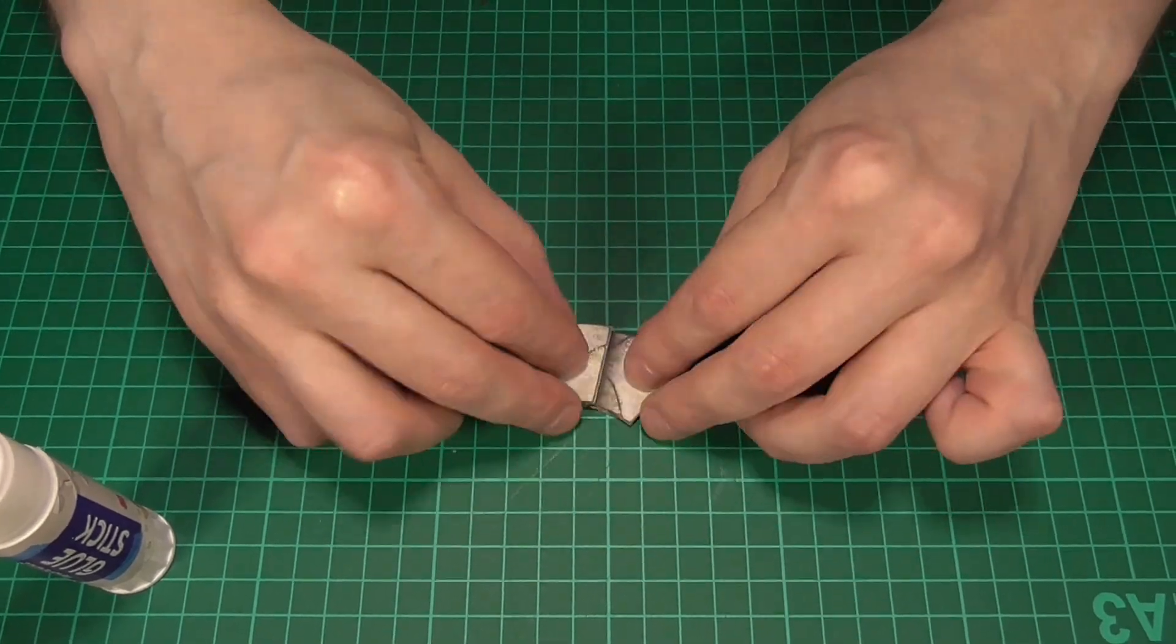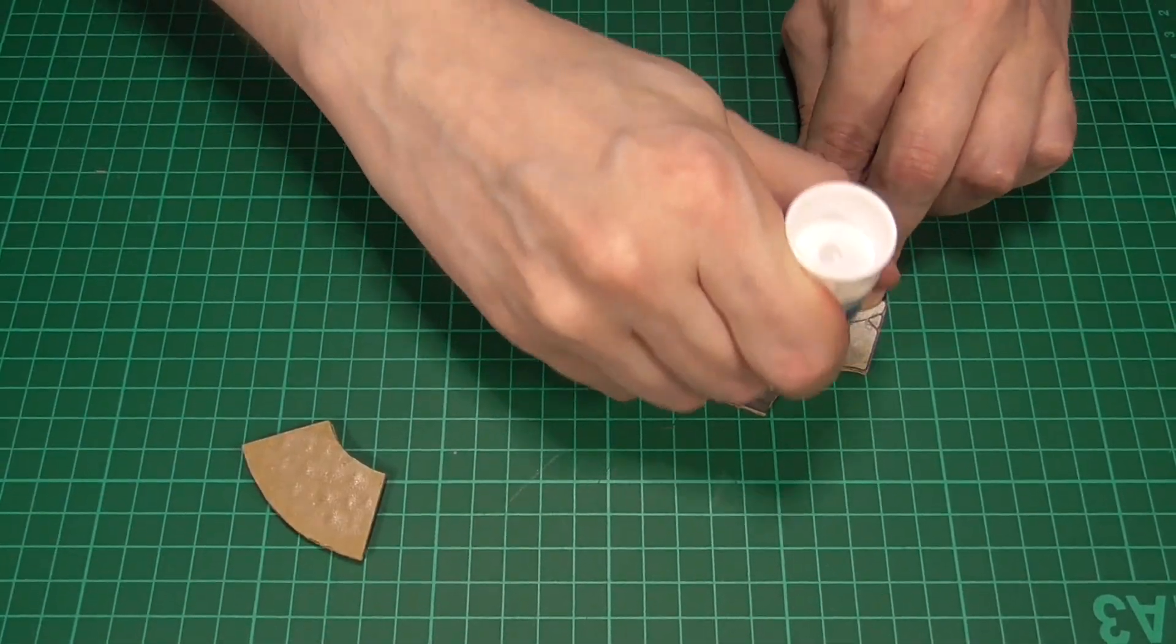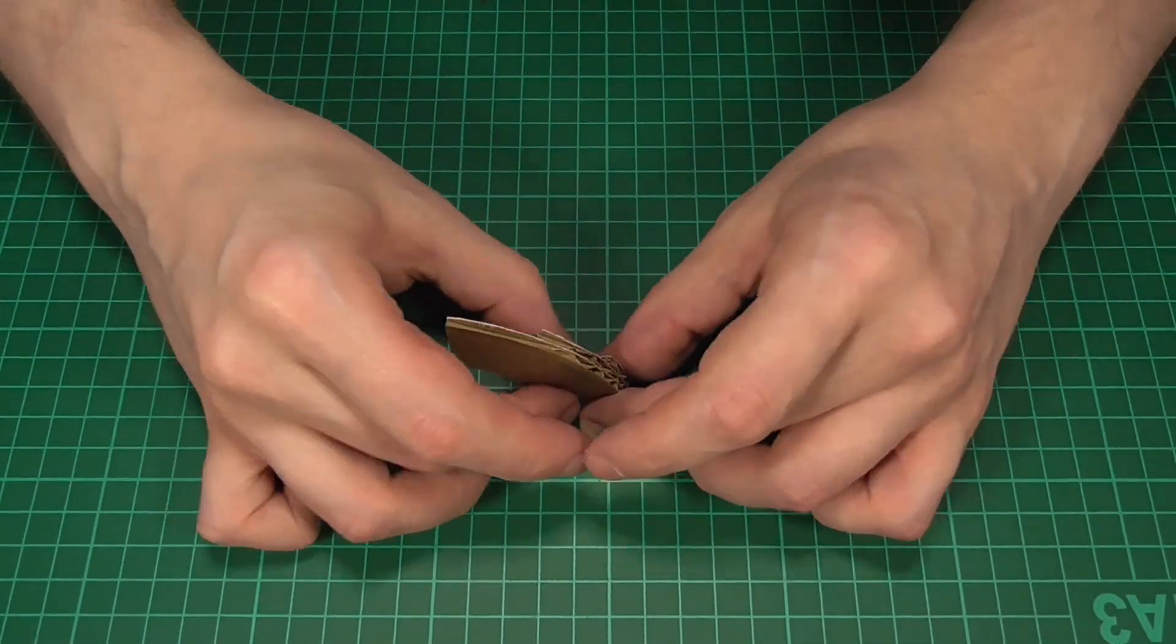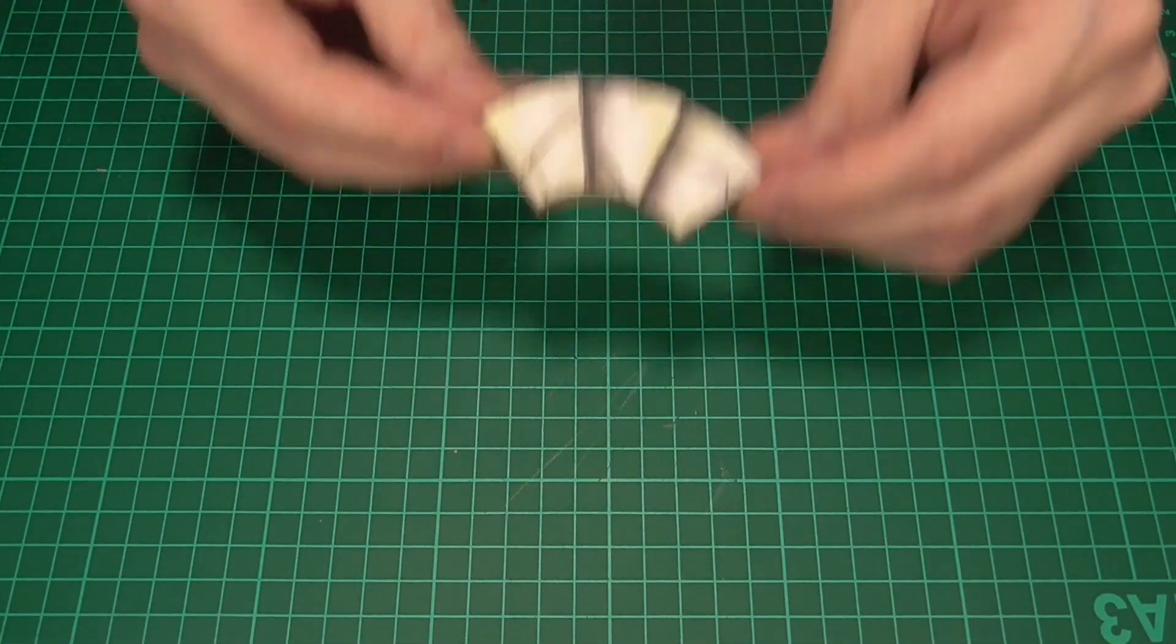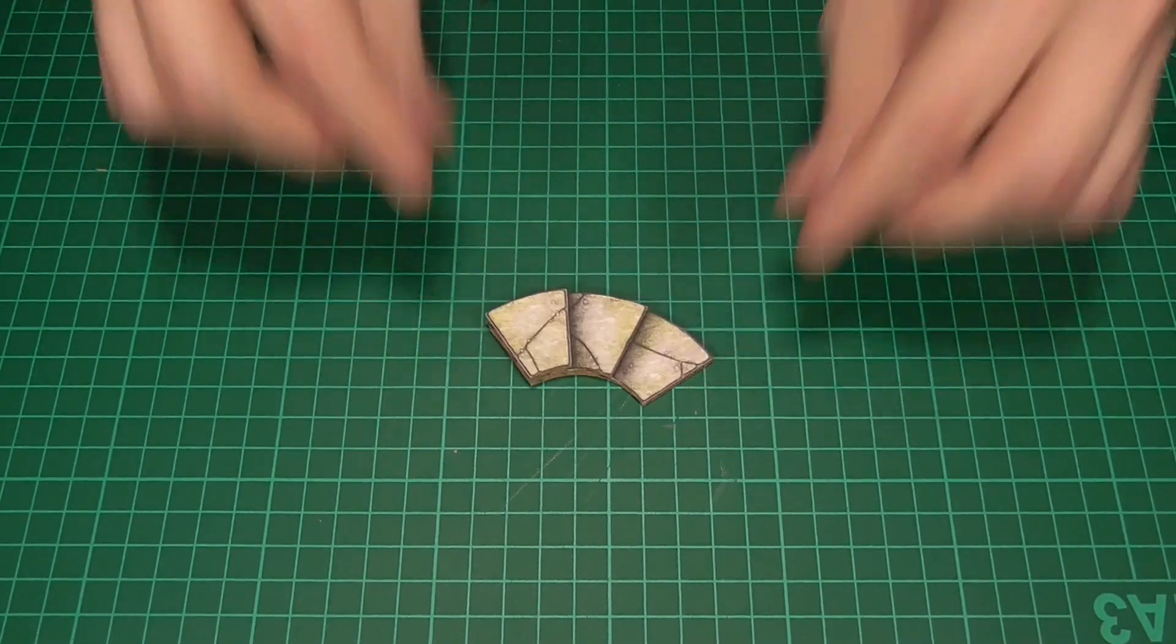And obviously we want to try and align the sides as best as we can, and also make sure that the back edge of all three pieces—that's the edge that will be the back of the topmost step—we want to make sure that's flush as well. And with any luck, this is the kind of thing that we should be left with. So that's the steps themselves done.